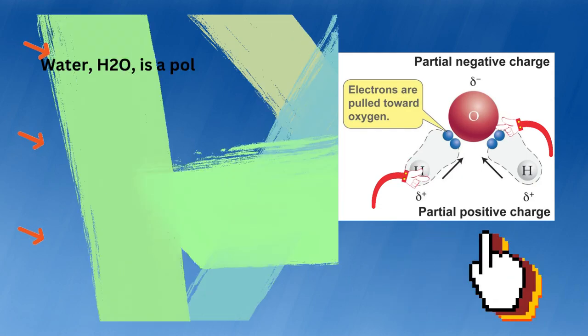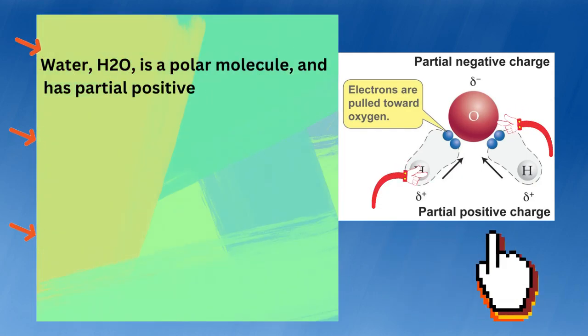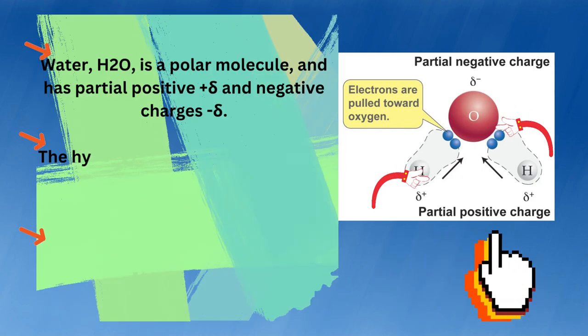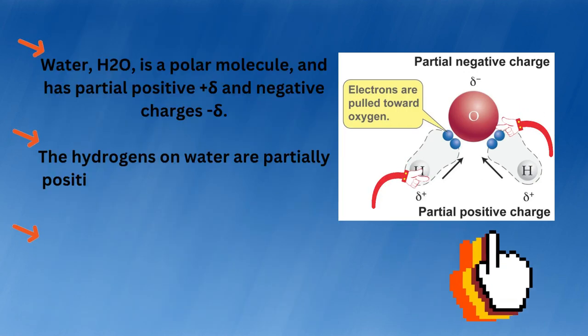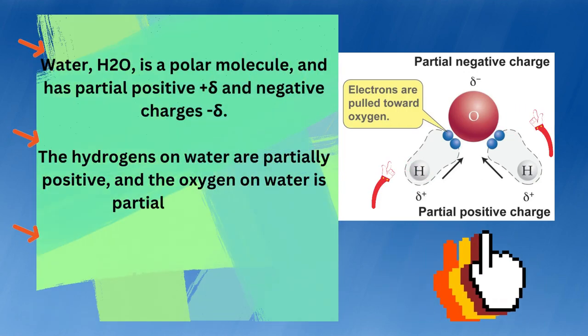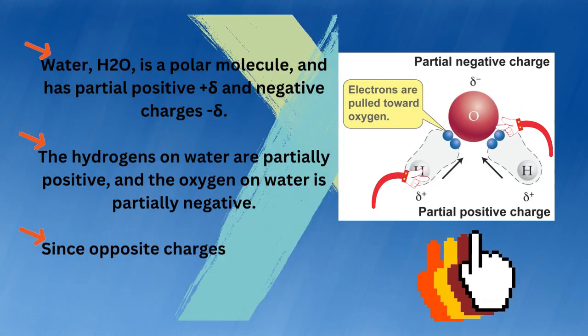Water, H2O, is a polar molecule and has partial positive and negative charges. The hydrogens on water are partially positive, and the oxygen on water is partially negative.